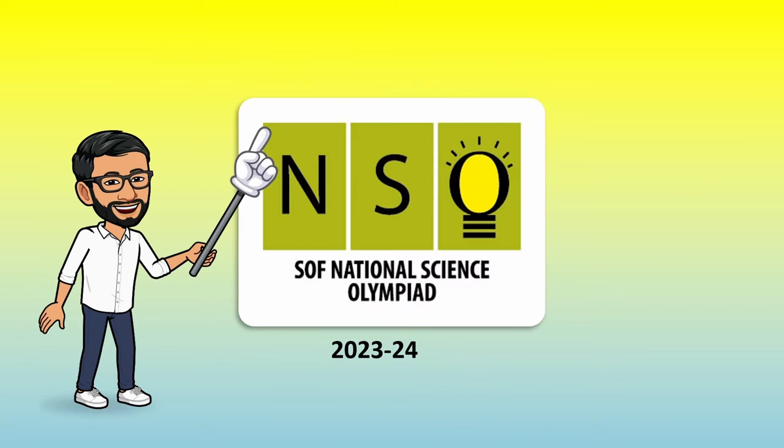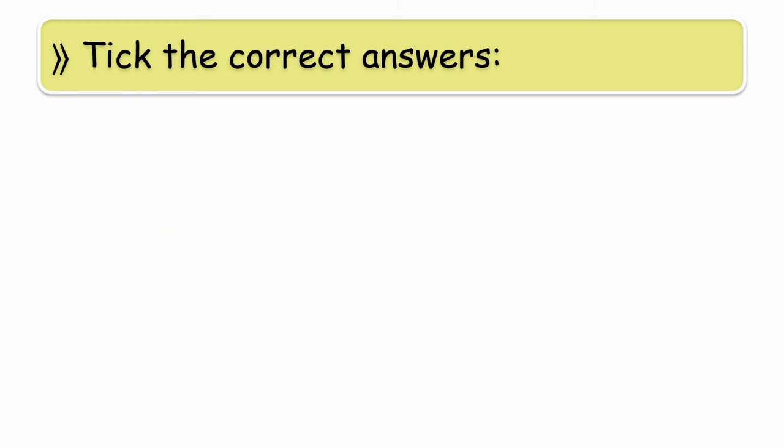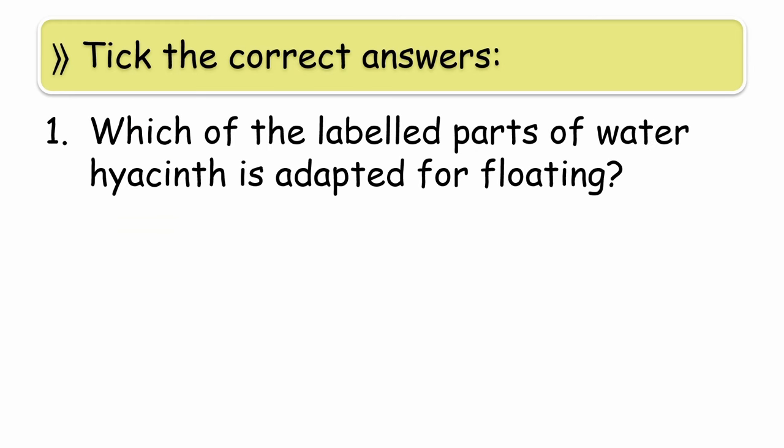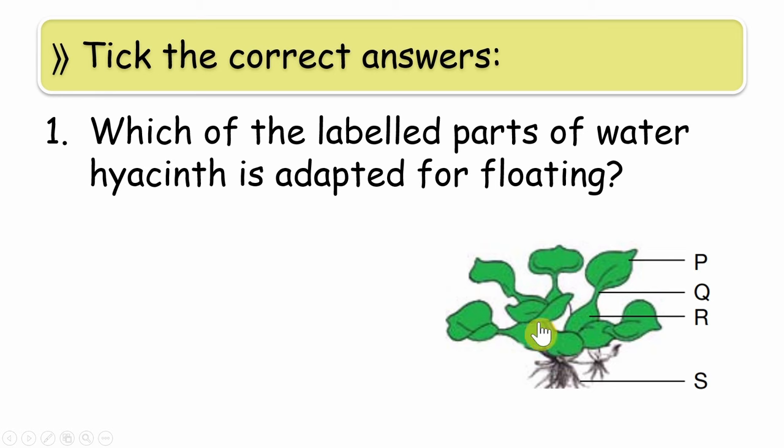Hi friends, today we are going to solve ISO quiz number 5. Let us see the first question. Tick the correct answer: which of the labeled parts of water hyacinth is adapted for floating? This is the image. As you can see, there are different parts of this water hyacinth that they have shown and labeled as P, Q, R, and S.